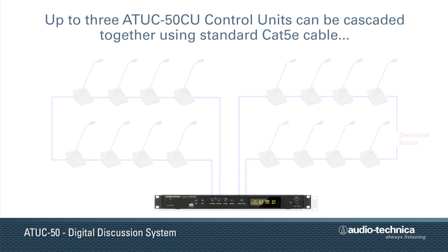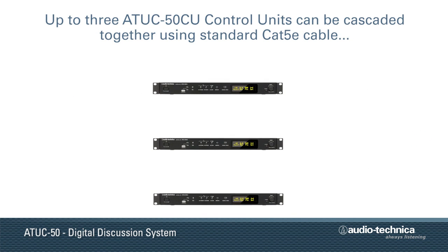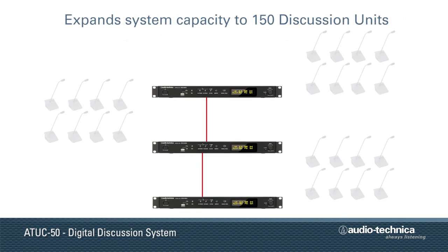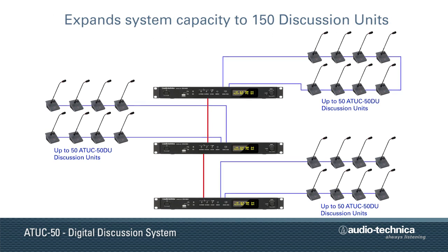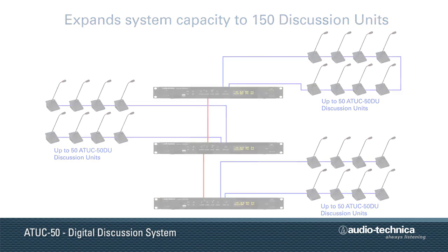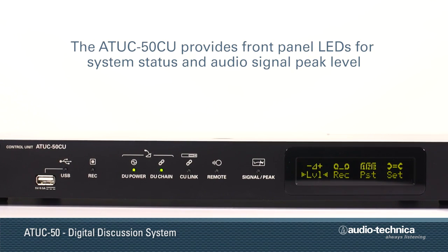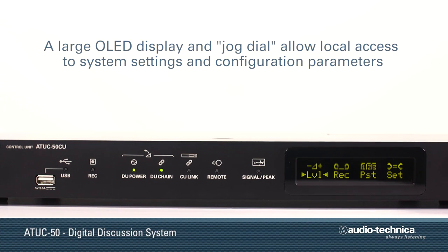Up to three ATUC50CU control units can be cascaded together using standard CAT5E cable, expanding the system capacity to 150 discussion units. The ATUC50CU provides front panel LEDs for system status and audio signal level, and a large OLED display and jog dial allow local access to system settings and configuration parameters.